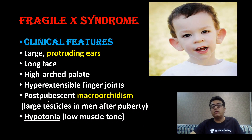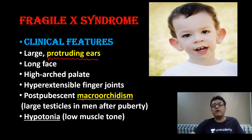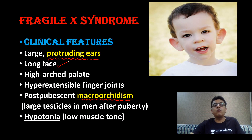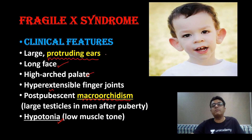These are the classical features of Fragile X syndrome — you need to remember two features: large protruding ears and macro-orchidism (large testes). A mentally retarded male child having large ears and large testes — that is Fragile X syndrome. Other features include long face, high arched palate, hyperextensible finger joints, and hypotonia. Always remember: large ears and large testes in a mentally retarded male child means Fragile X syndrome.